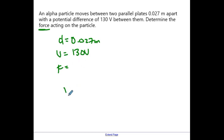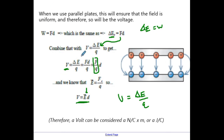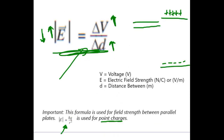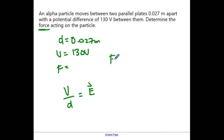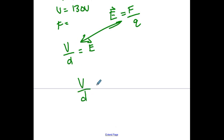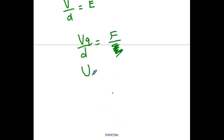What I do know is that voltage over distance can be equivalent to field strength. We also know field strength equals force over charge. Through substitution, force over charge equals voltage over distance. To isolate for force, I just need to multiply charge up to the other side, giving us the formula: force equals voltage times charge over distance.